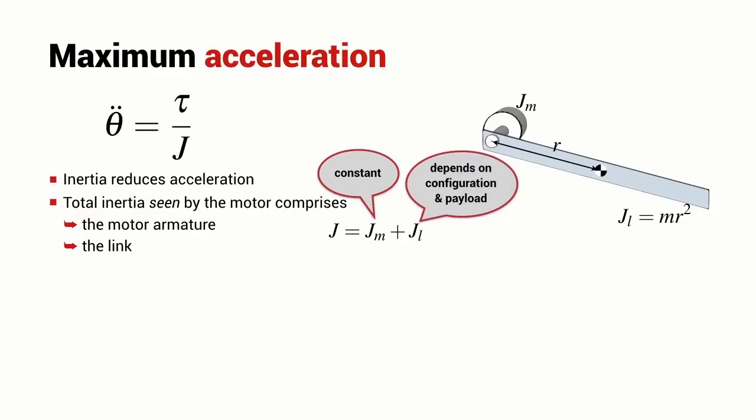In this simple case, the inertia of the link is a constant, but for a real robot, the inertia is going to depend on the configuration of all of the links that are attached to the end of this particular link and also to the payload which is held by the last link in the chain. So, the link inertia is going to be highly variable.